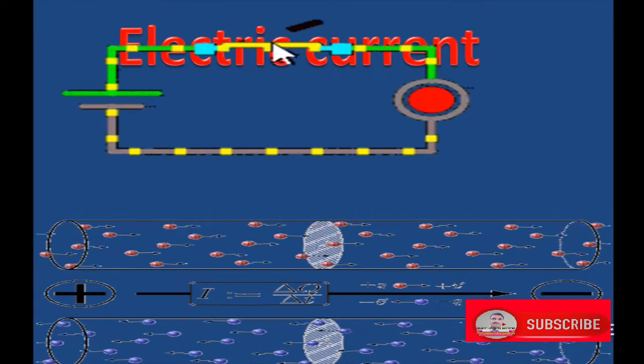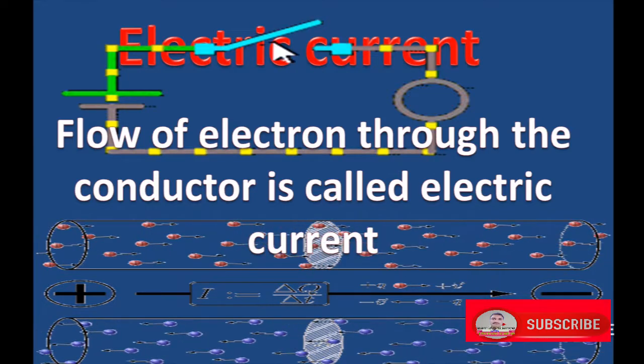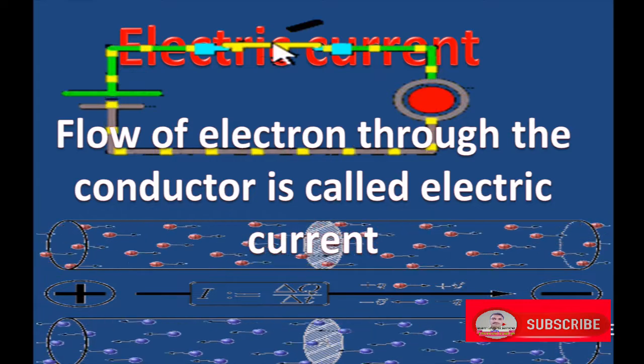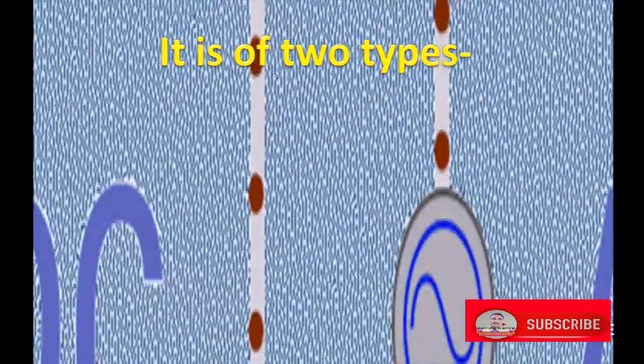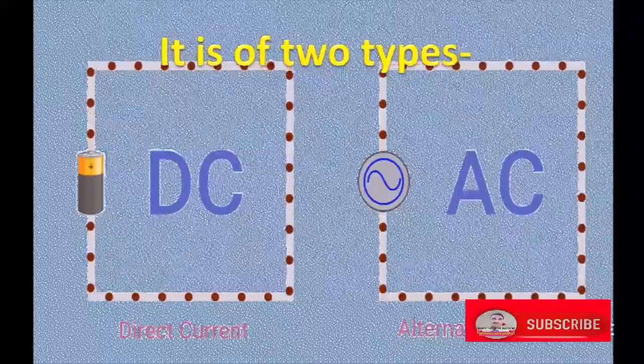Electric current. Flow of electrons through the conductor is called electric current. It is of two types: alternating current AC and direct current DC.